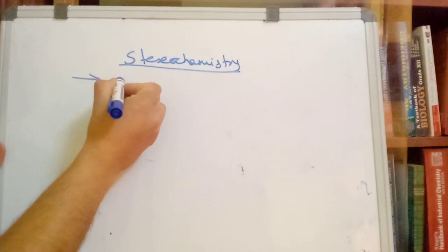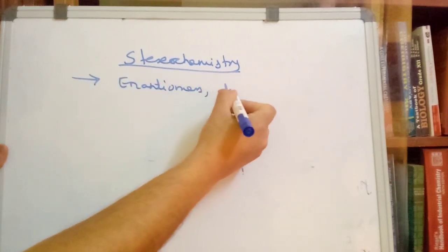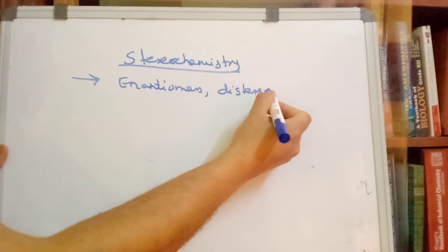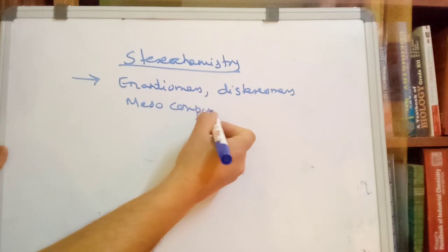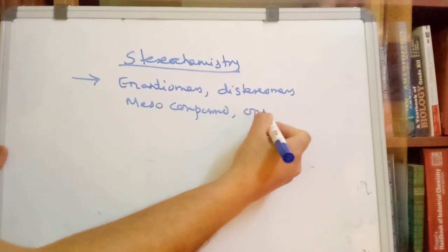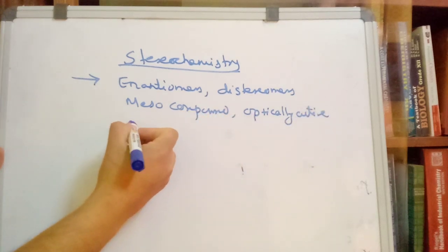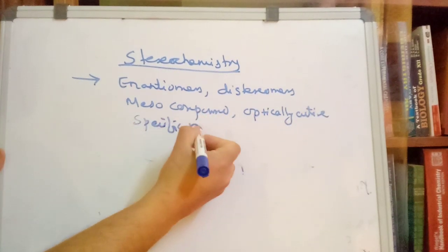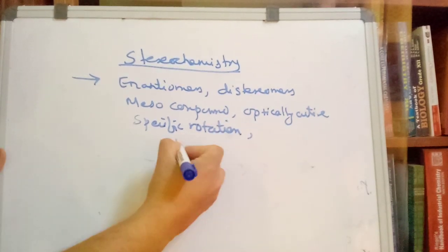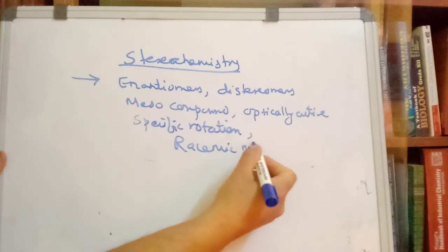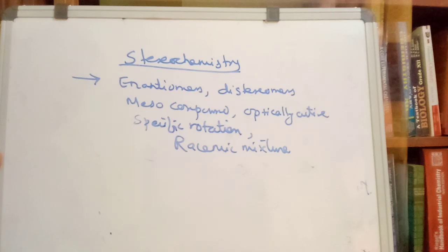What are D and L stereoisomers? What is the meso compound? What is optically active? What is specific rotation? What are enantiomers? What is racemic modification, and what is a racemic mixture? What is the concept of a racemic mixture?